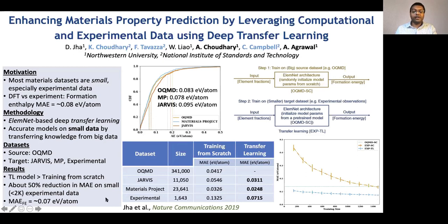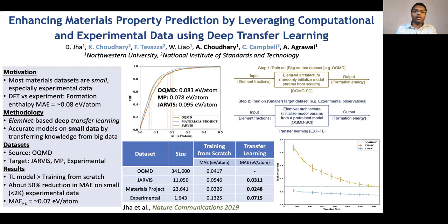An interesting thing to note is that the final error we get on the small experimental data is about 0.07 electron volts per atom, which is actually comparable to or even slightly better than DFT's own error. Looking at three popular DFT databases compared against experimental data, DFT's error is about 0.08 eV, while transfer learning achieves comparable or slightly better accuracy with much less computation. This work was published in Nature Communications.